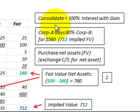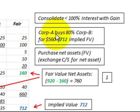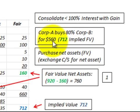Here we're going to look at a consolidation with less than 100% interest with a gain. For example, the parent company, Corporation A, buys 80% of Corporation B, the subsidiary, and they're going to pay $560,000 for that 80% interest.